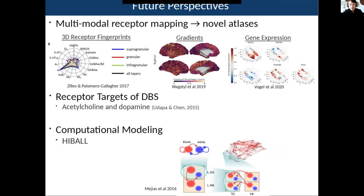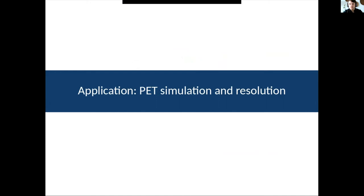There are lots of future perspectives for this work. We can look at gradients of receptor distribution, gene expression, do 3D fingerprint analysis, and use this data for computational modeling of how neuronal information is propagated through the brain. One particular application of interest is using PET for receptor mapping — that shouldn't be forgotten even though it has lower resolution — and we can use this receptor reconstruction to do realistic PET simulation.